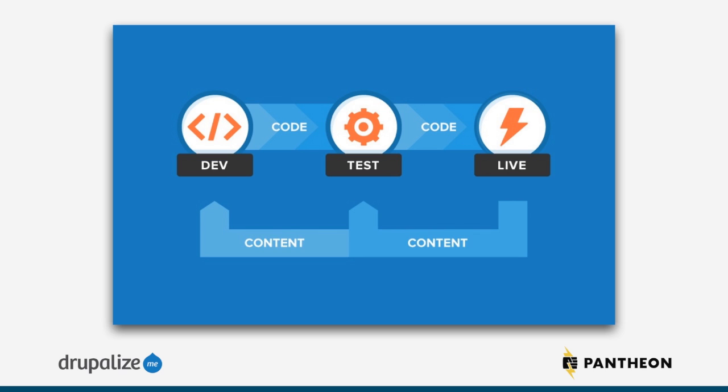For content, you want to make sure that your dev and test environments are accurate and up to date with what's going on. You can bring content down from your live site because people are still doing stuff on the live site — adding content and making changes. So you bring that content back down to your test and dev environments to make sure you're matching the live site as closely as possible. Pantheon provides tools that let you push code from dev to test and from test to live, and also something that will bring your content down — so you don't have to do any of that manually.